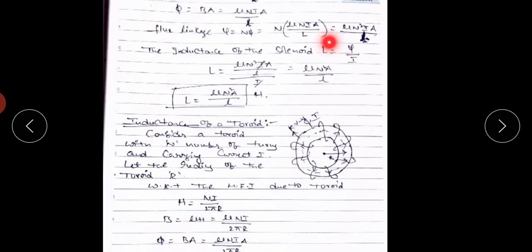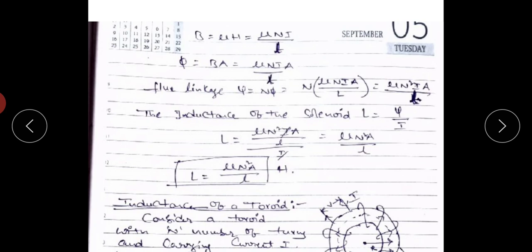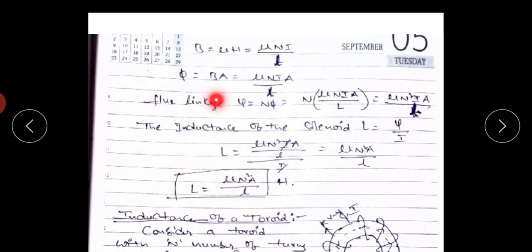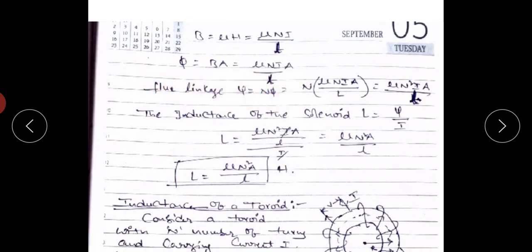The magnetic field intensity of the solenoid: H equals N·I divided by l. Next, find magnetic flux density: B equals μ times H equals μ·N·I divided by l. Then magnetic flux: φ equals B times A equals μ·N·I·A divided by l. Flux linkages: ψ equals N times φ equals μ·N²·I·A divided by l. Finally, inductance L equals flux linkages divided by current: L equals μ·N²·A divided by l Henrys.